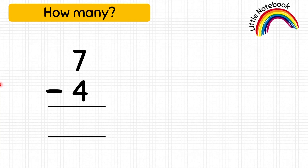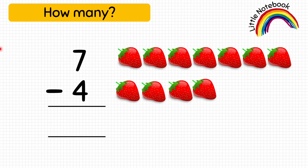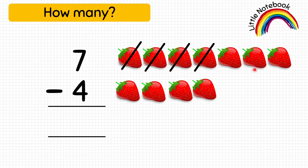Next question: seven minus four equals how much? Seven is representing these seven strawberries and four is representing these four strawberries. To subtract, let's cross out four strawberries — one, two, three, four. How many strawberries are we left with? One, two, three — so the answer is three. Seven minus four equals three.